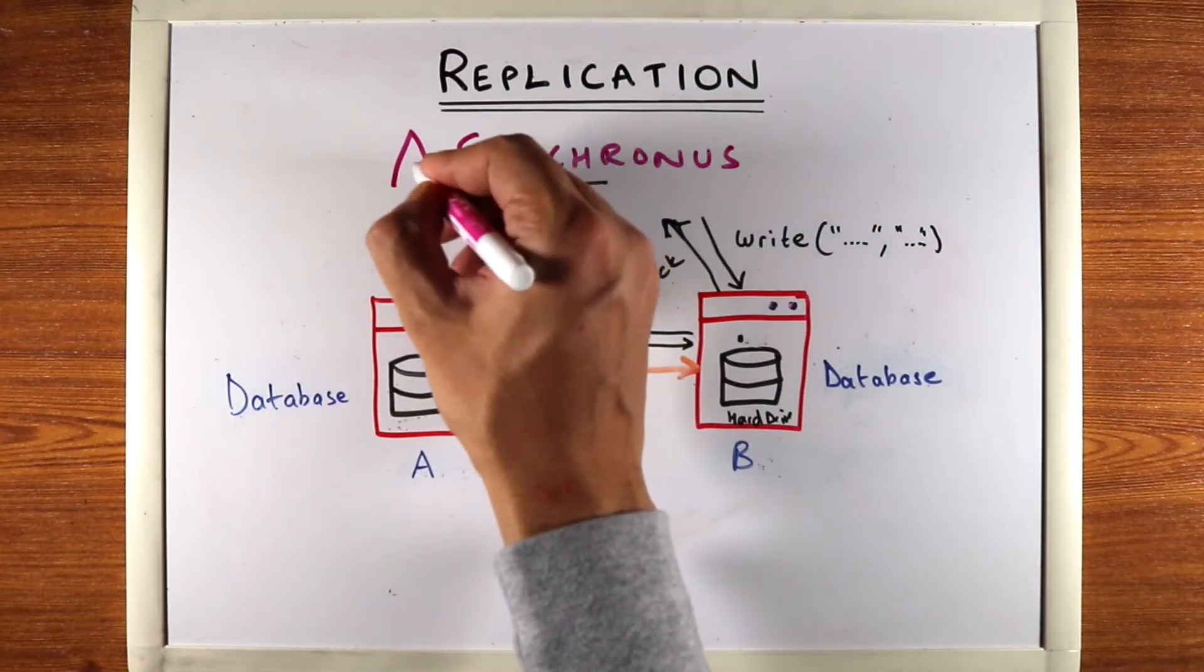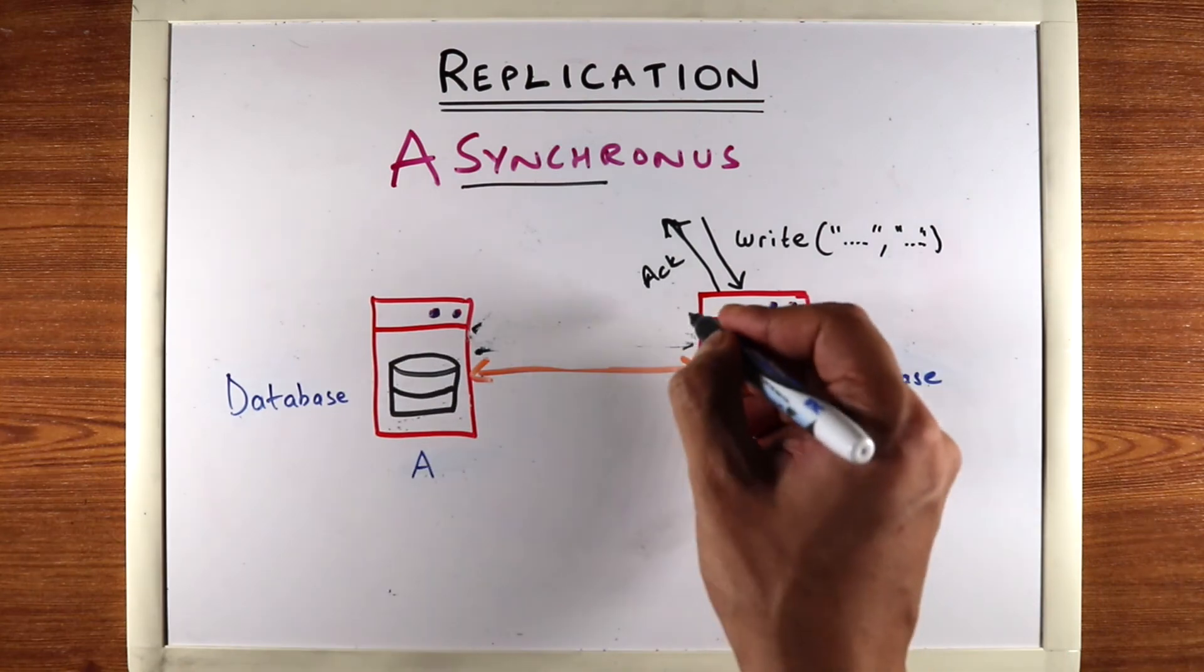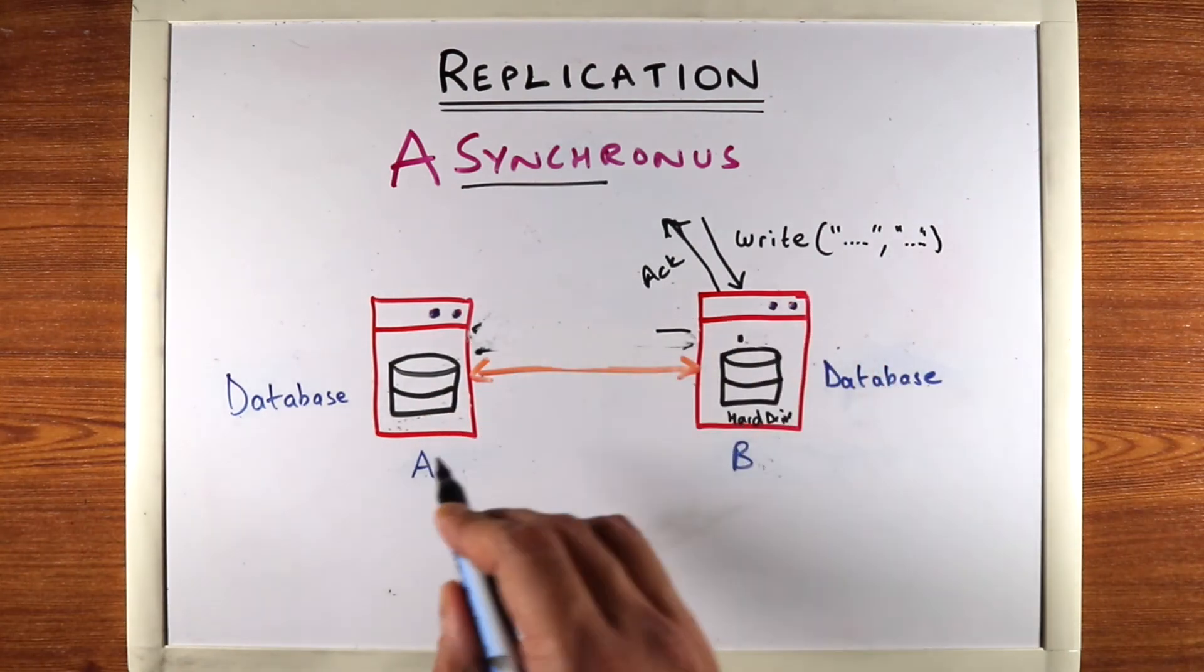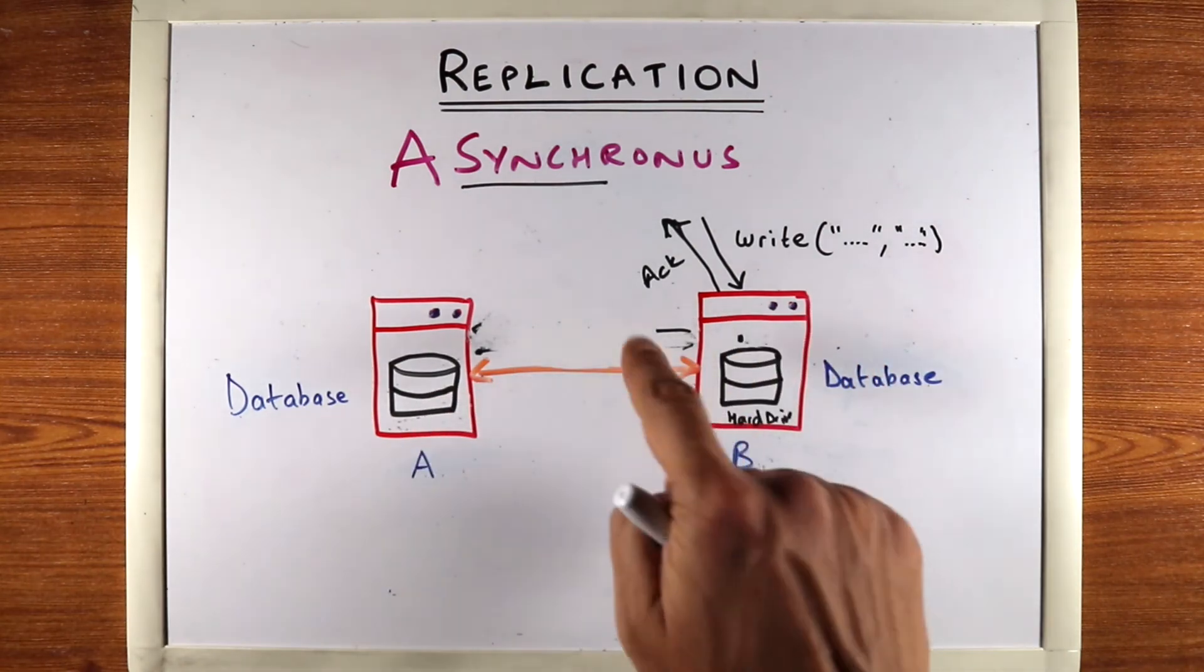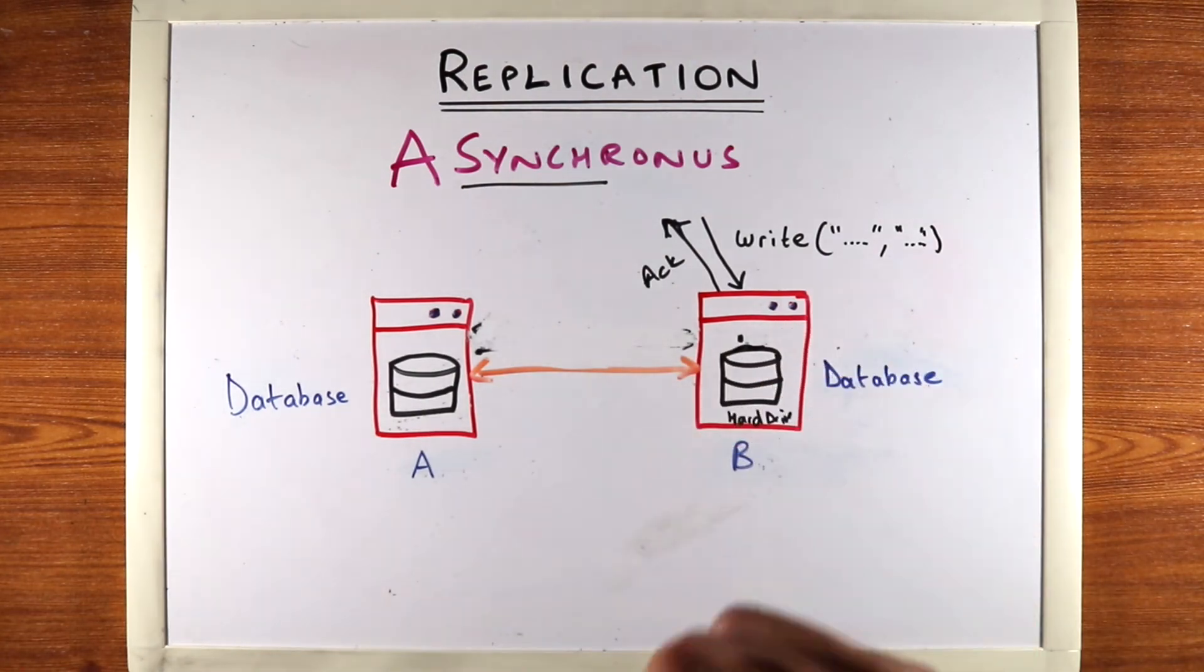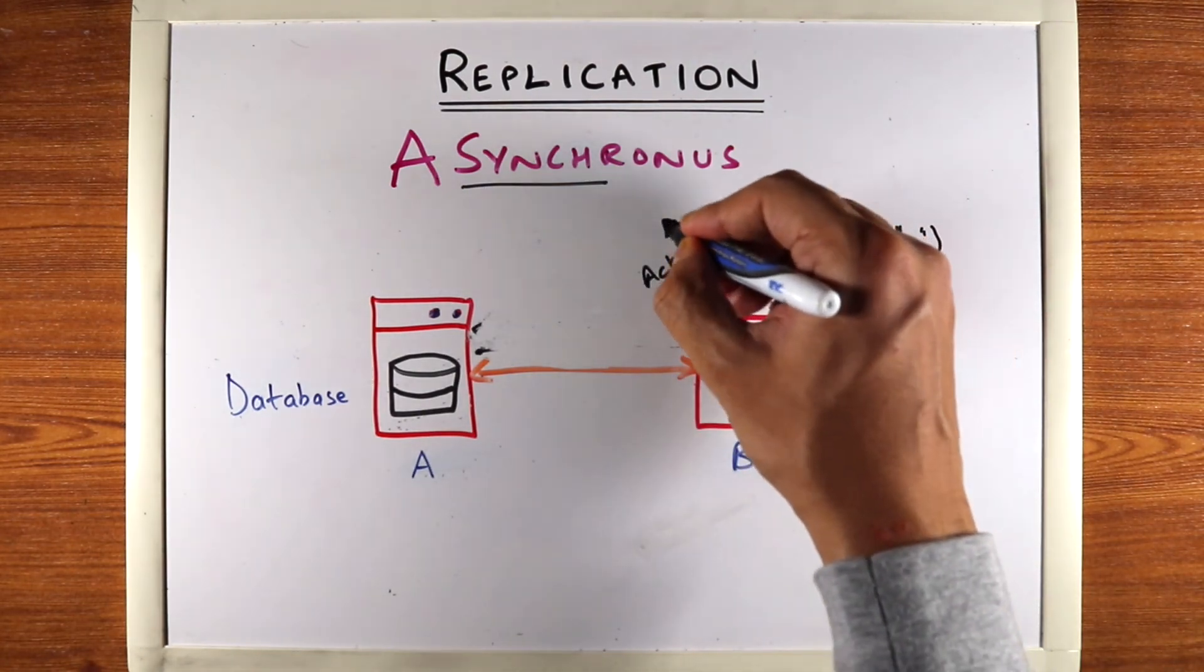Now the second method is asynchronous replication. With this, database B does not wait for database A to write it to its hard drive. Database B simply commits it to its local hard drive and then returns the acknowledgement right away.